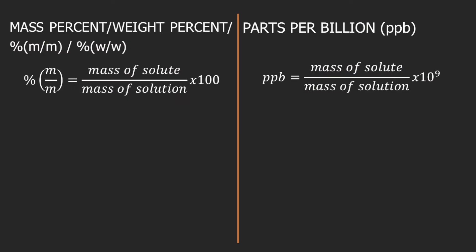First, let's have a quick recap about mass percent and parts per billion. Mass percent is also known as percent by mass, weight percent, percent by weight, or you can encounter symbols like percent m/m or percent w/w. The formula for mass percent is: mass of solute divided by mass of solution, times 100. On the other hand, parts per billion, or PPB, is equal to mass of solute divided by mass of solution, times 10 raised to 9, or 1 billion — that's why you call it parts per billion.